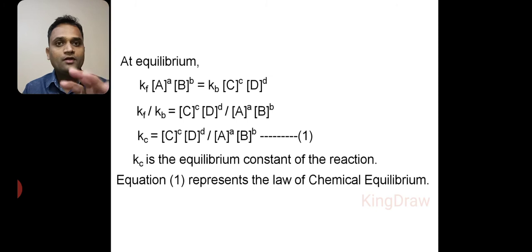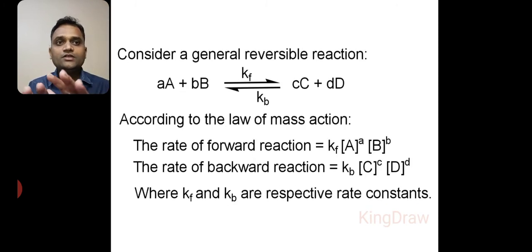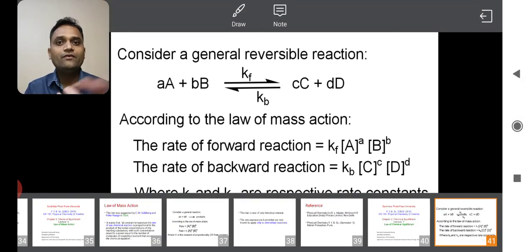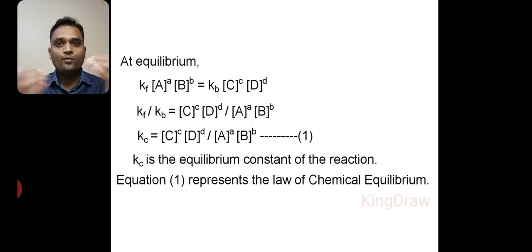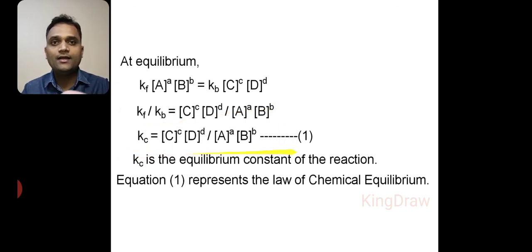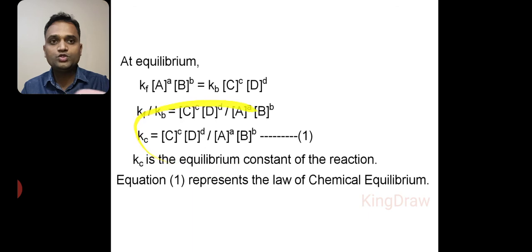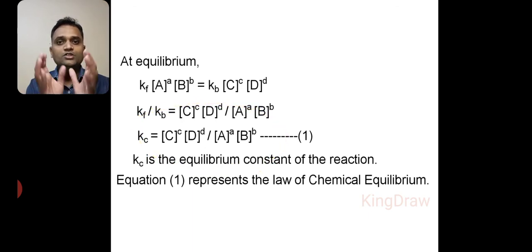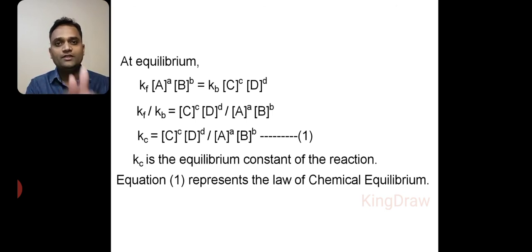To study this law, we started with a general reversible reaction. For that reaction, we wrote the rate of forward reaction, then the rate of backward reaction, then at equilibrium we considered both rates to be equal. By performing further calculation, we arrived at Kc equals [C] raised to c into [D] raised to d upon [A] raised to a into [B] raised to b. While writing the statement of this law, we converted that mathematical form into words. This is the law of chemical equilibrium.